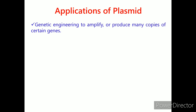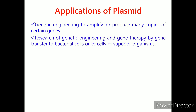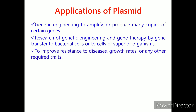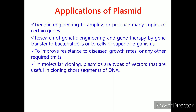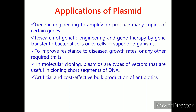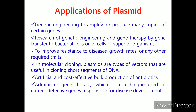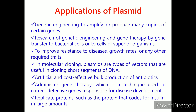Genetic engineering to amplify or produce many copies of certain genes. Research in genetic engineering and gene therapy by gene transfer to bacterial cells or to cells of superior organisms to improve resistance to diseases, growth rates, or any other required traits. In molecular cloning, plasmids are types of vectors that are useful in cloning short segments of DNA. Artificial and cost-effective bulk production of antibiotics. Administering gene therapy, which is a technique used to correct defective genes responsible for disease development. Replicating proteins such as the protein that codes for insulin in large amounts.